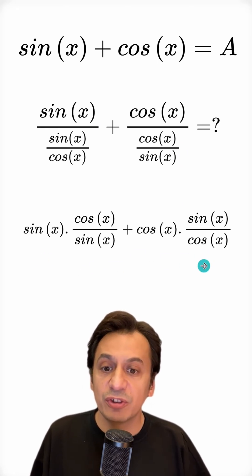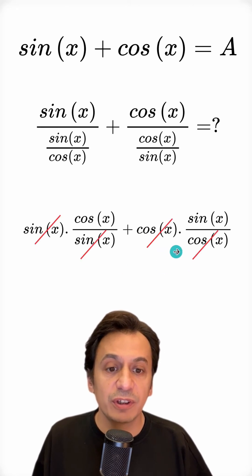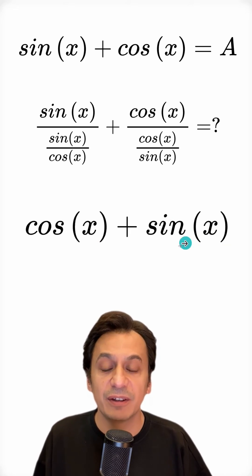When I do this operation, I see the following. The sine x terms will cancel each other out, and the cosine x terms will also cancel each other out. So, what remains is cosine x plus sine x.